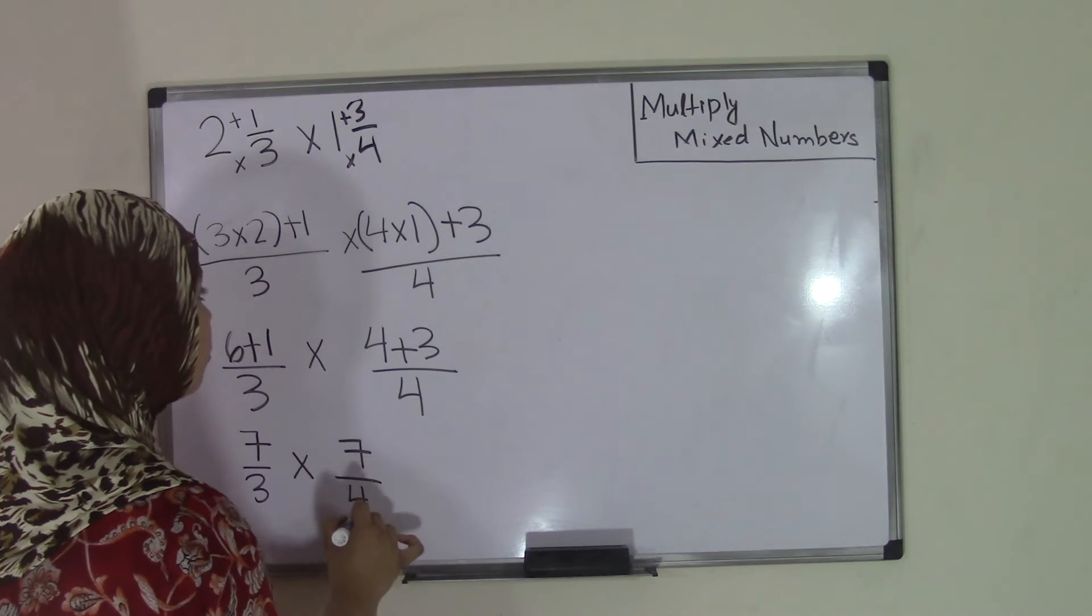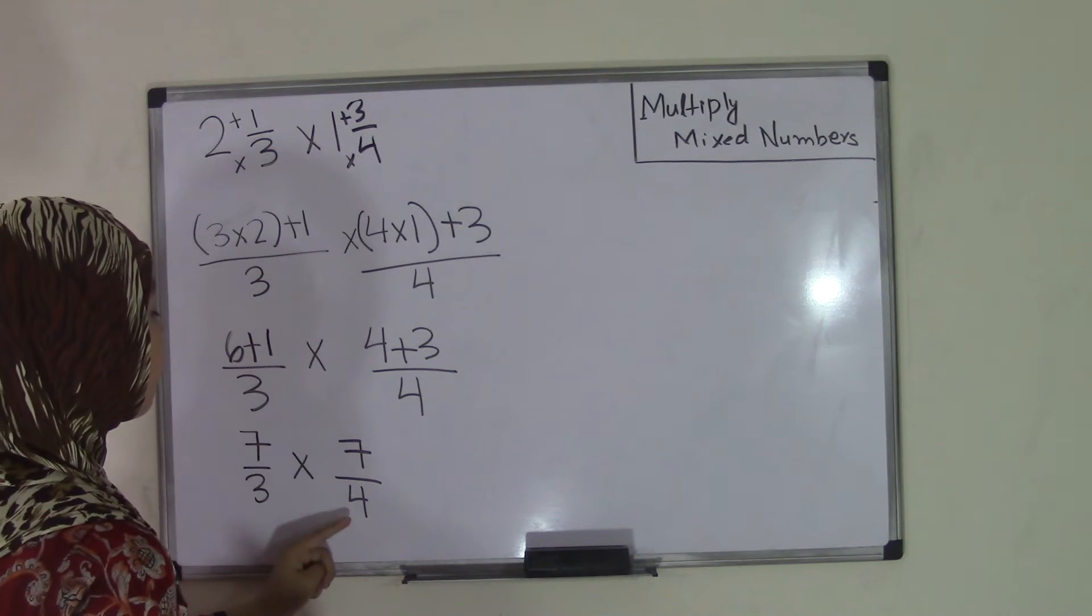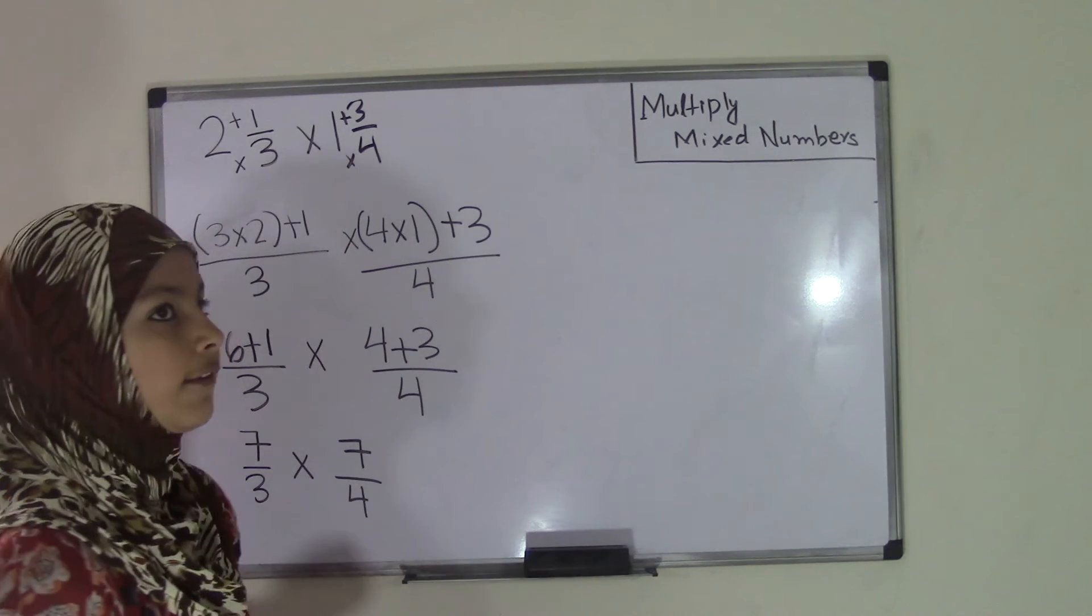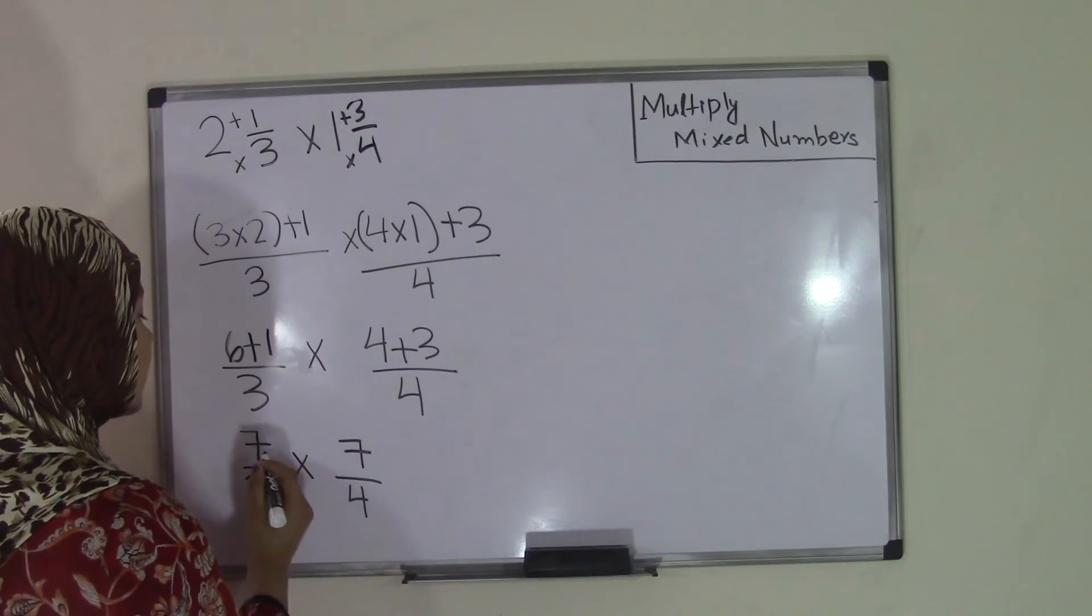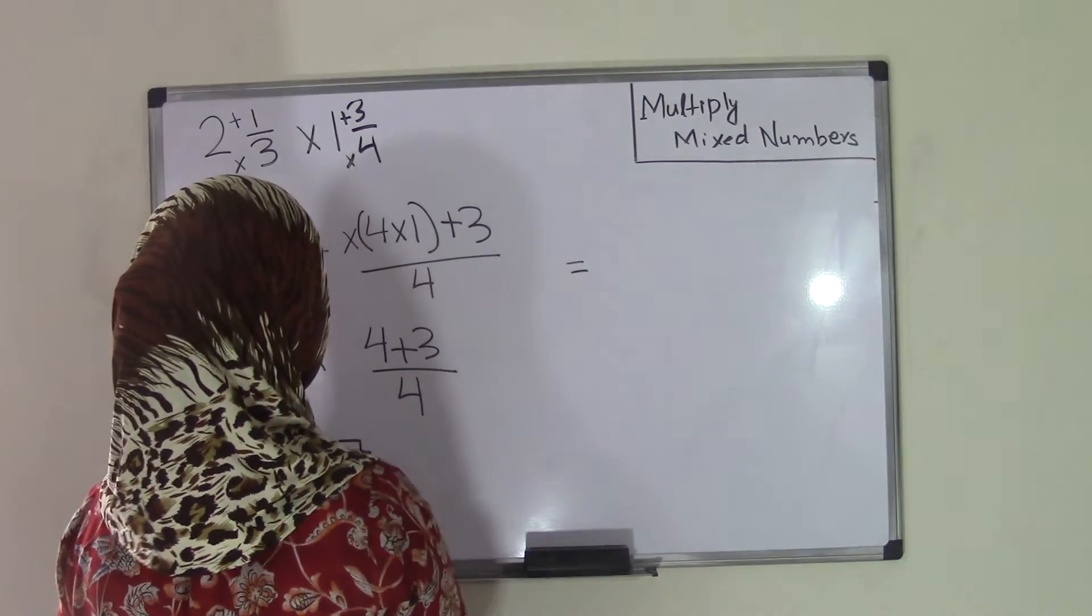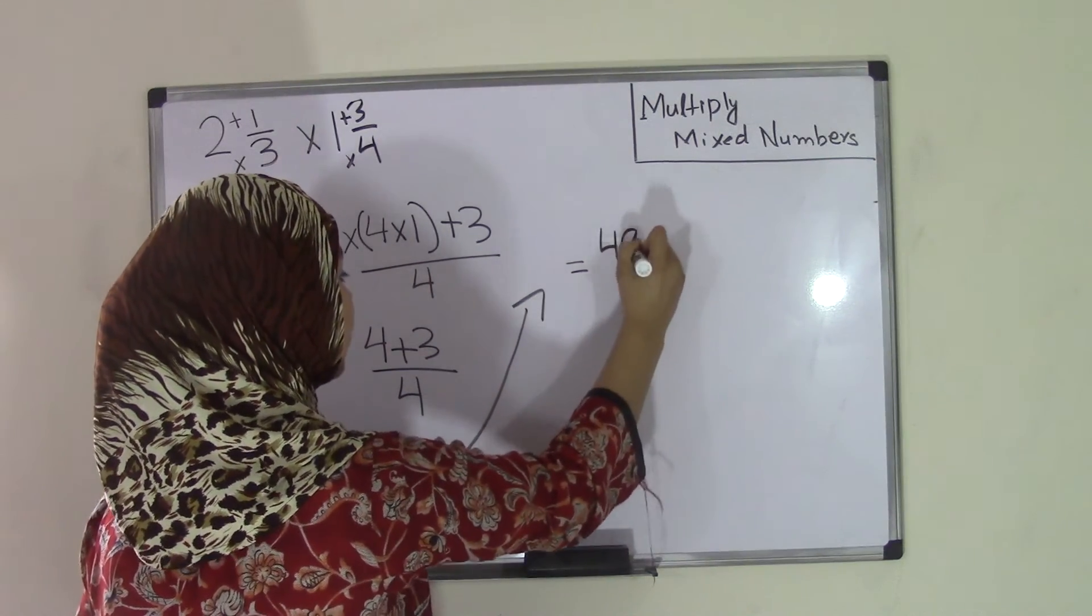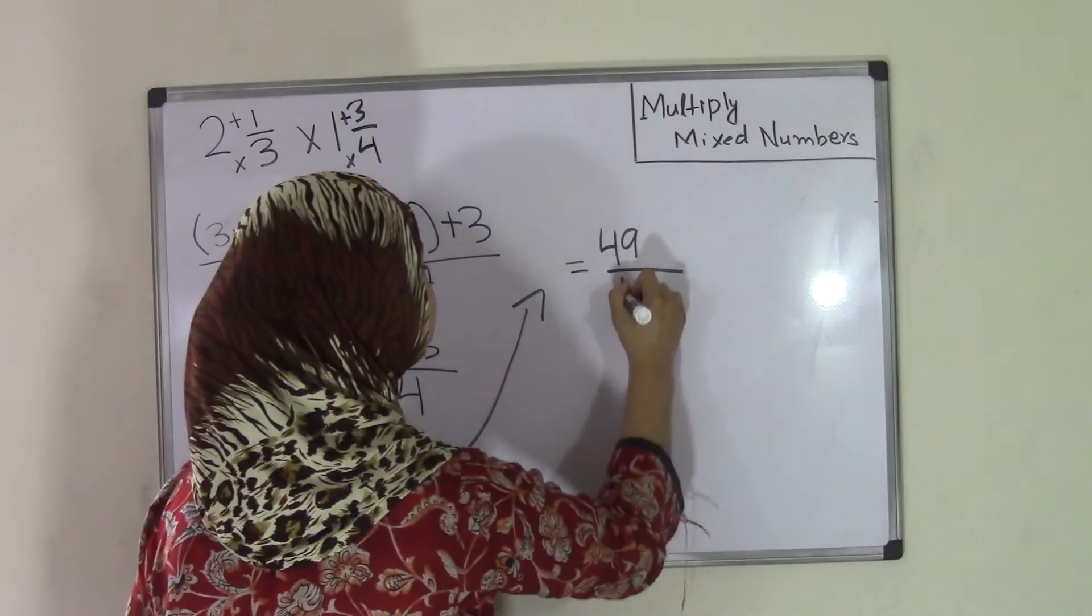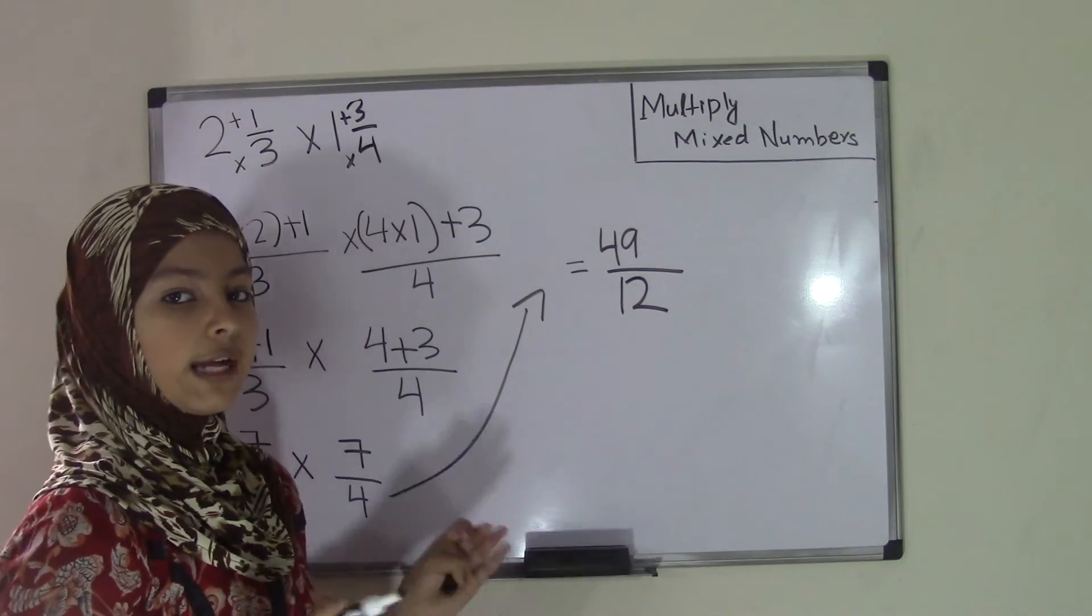So now we have our two improper fractions, which are 7/3 times 7/4. Now, remember, when you have two improper fractions, or even if they are proper fractions, you just have to do direct multiplication. So we all know that 7 times 7 is 49. So we're going to bring this step over here. So we have 49 over 3 times 4 is 12. So that means our answer is 49/12.